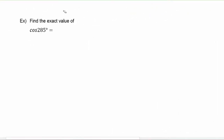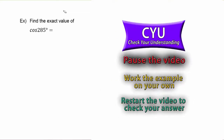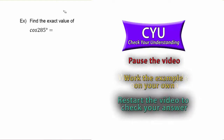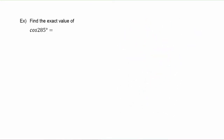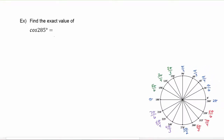In this next example we have to find the exact value of cosine of 285 degrees. It's CYU time — pause the video, work the example on your own, then restart the video to check your answer. This problem is given in degrees, so we're going to stay in degrees. You have many options; for example, we could do cosine of 240 degrees plus 45 degrees.